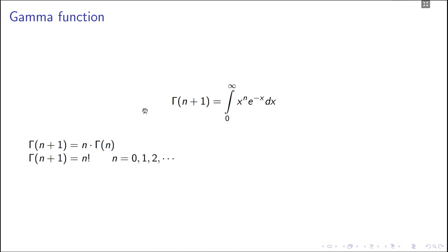Secondly, if n is a positive number, then gamma n plus 1 is n factorial. So gamma 1 is like 0 factorial, that is 1. Gamma 2 is 1 factorial, gamma 3 is 2 factorial, and so on.